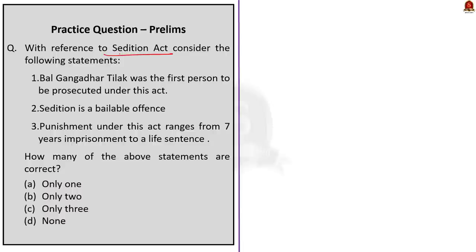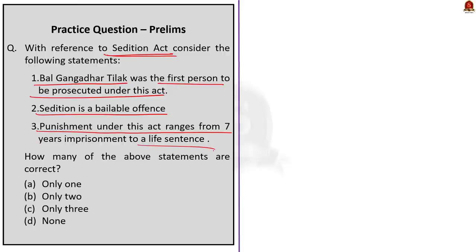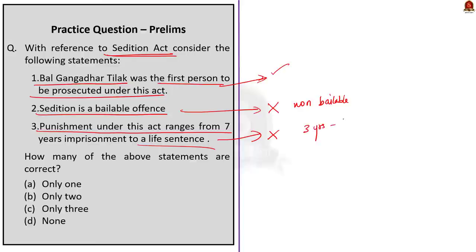Question number four regarding the Sedition Act: Statement one — Bal Gangadhar Tilak was the first person to be prosecuted under this act, which is correct. Statement two — sedition is a bailable offence, which is incorrect because sedition is a non-bailable offence. Statement three — punishment under this act ranges from seven years imprisonment to a life sentence, which is also wrong because the punishment ranges from three years to life imprisonment. The Law Commission has proposed to increase the punishment to seven years, but no decision has been taken yet. So the correct answer is option A: only one statement is correct.